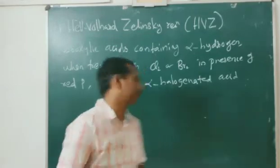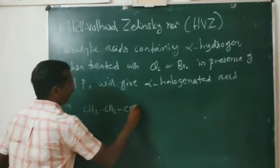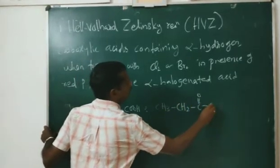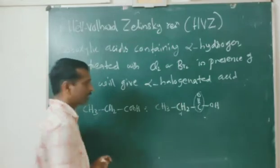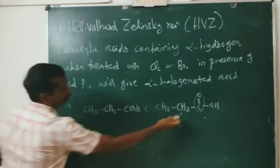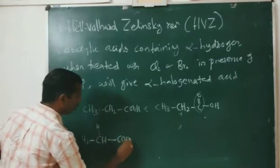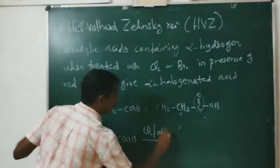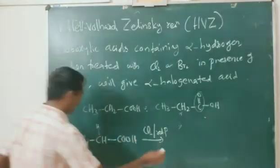Carboxylic acid containing alpha hydrogen — for example, CH₃CH₂COOH. Here the carbon attached to the C=O group is the alpha carbon. In that alpha carbon there are alpha hydrogen atoms. One of those alpha hydrogens — CH₂ can be written as CHH — when treated with chlorine or bromine in presence of red phosphorus, the alpha hydrogen will be replaced by a halogen.